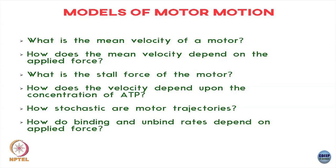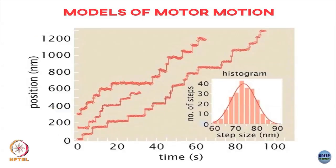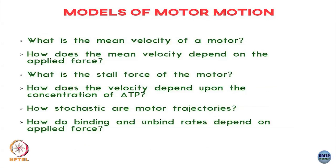You could ask how stochastic these motor trajectories are. These are stochastic events — it is not that the motor takes a step at every fixed interval of time. It stays bound for some time, and that time interval can vary from step to step. These are inherently stochastic processes, so how do I model this?